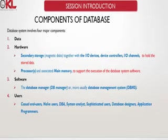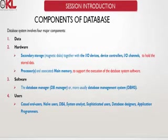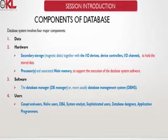The components of a database are: first, data; second, hardware — secondary storage devices and input/output devices; third, processes — what operations are performed; fourth, software — whatever software you are using for the database; and fifth, users — casual users, end users, sophisticated users — everyone comes under the various kinds of users.